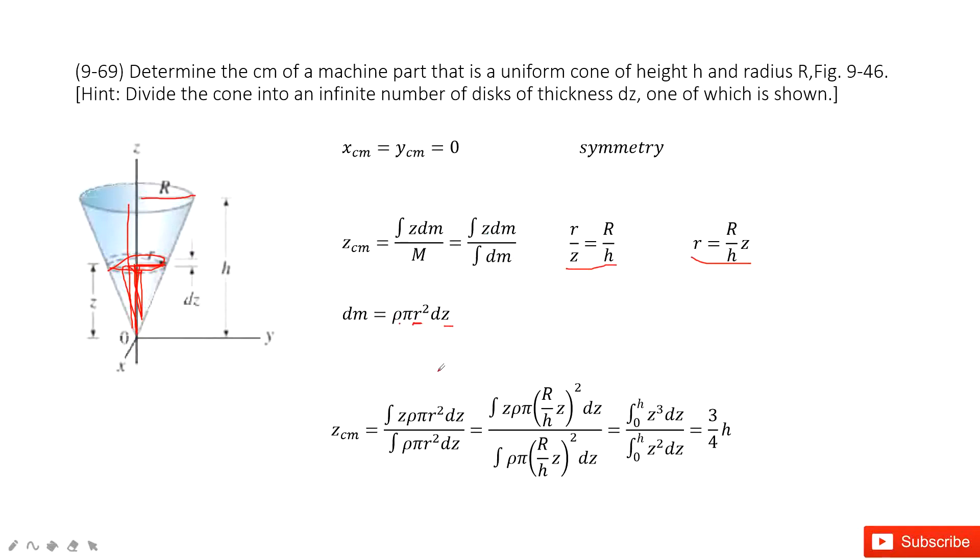Now we input the dm inside. And we replace r with R divided by h times z. And then we simplify it. We get this equation. And solve it. We get 3 over 4 h. Thank you.